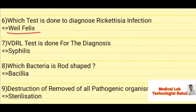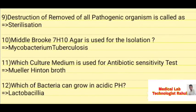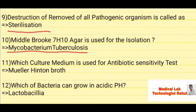The Weil-Felix test is done for the diagnosis of Rickettsia infection. Bacilli are rod-shaped bacteria. Destruction or removal of all pathogenic organisms is called sterilization. Middlebrook 7H10 agar is used for the isolation of Mycobacterium tuberculosis.